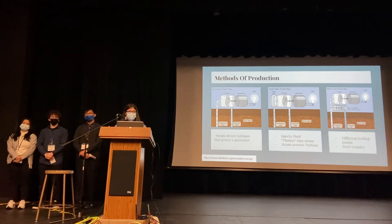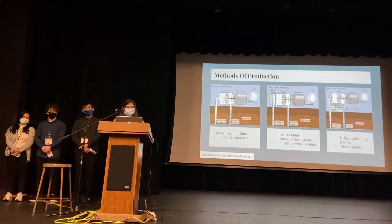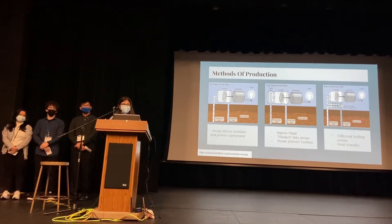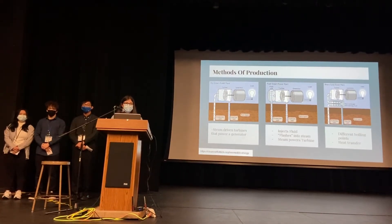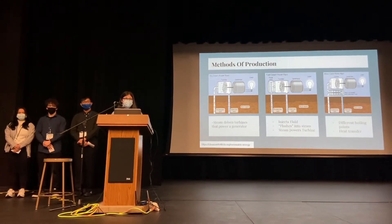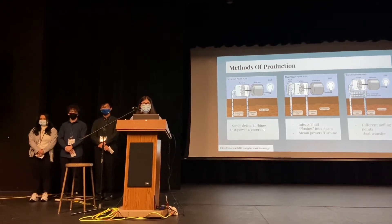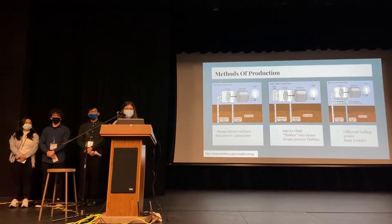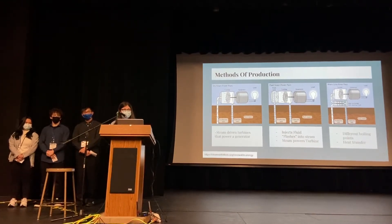The methods of production are dry steam, flash steam, and binary cycle. Dry steam power plants drill into the earth to the groundwater, and that water wells up and produces steam that powers the turbine, which powers the generator, conducting electricity. Flash steam power plants send water into a flash tank where it flashes into steam and powers the turbine, and the water is then injected into the injection well, repeating the cycle. In the binary cycle power plant, the water comes up and goes to a heat exchanger, which heats a secondary liquid with a lower boiling point than water, powering the turbine faster than the other processes. This is the most used cycle.